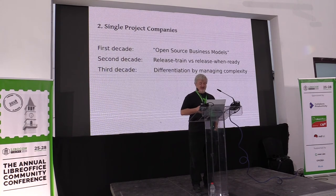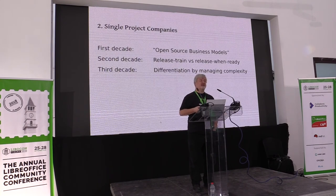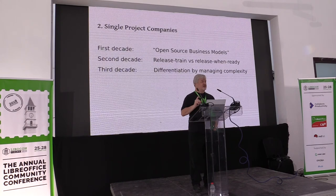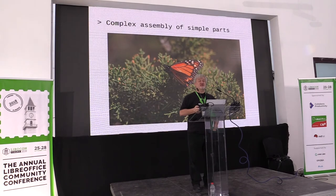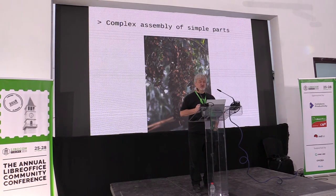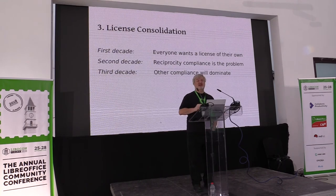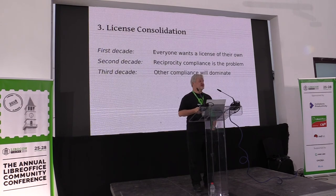Every presentation you heard was talking about open source business models, just like every presentation you hear today is talking about how they're using the blockchain. By the second decade we were seeing open source change into something where people really wanted a dual-release model so that they wouldn't lose control to the dominant provider of their software. And in the third decade of open source I think we are going to see differentiation by the way they manage complexity rather than differentiating by the way they deliver a single product. I think we'd get really good at managing the complex assembly of simple parts into something unexpected and beautiful.